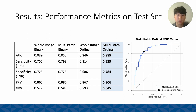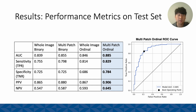In our scenario, we wanted a high PPV since we wanted to make sure that all images considered good quality are actually good quality, minimizing false positives. This would allow the dermatologist to see fewer false positive images — where a bad quality image is called a good quality image — which, as we discussed, could delay their ability to make accurate diagnoses.